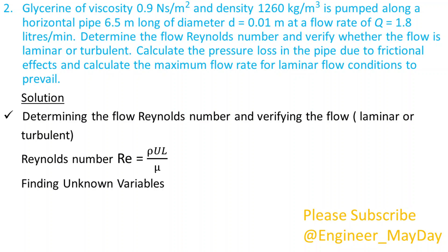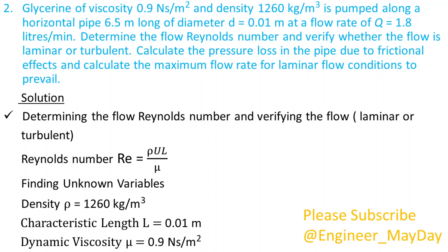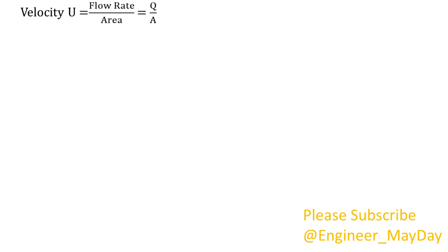Finding unknown variables. Density rho is given as 1260 kilogram per cubic meter. Characteristic length L is given as 0.01 meter. Dynamic viscosity mu is given as 0.9 newton second per square meter. Velocity is equal to volumetric flow rate divided by area.